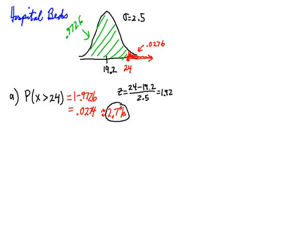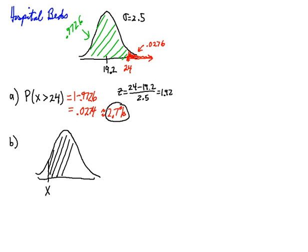Question B: 90% of the time, at least how many beds will be needed? For this one, we're given a percentage, and what answers that is the endpoint of an interval. So I'm going to work backwards compared to the previous problem. Very carefully thinking about what that means: 90% of the time, at least how many beds would be needed?